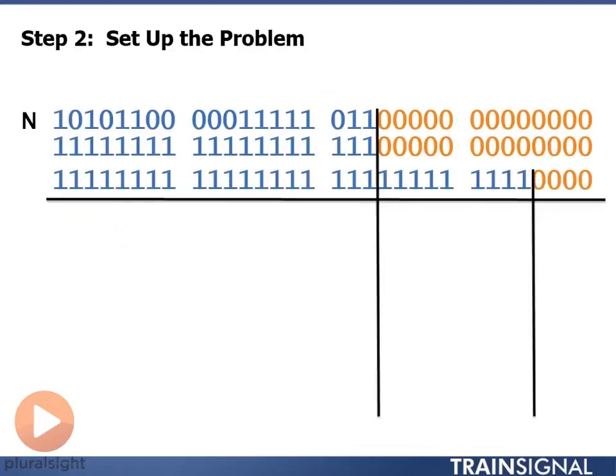So we set up the problem. We put our given address and mask up at the top. We draw a line between our given network and host portion. We then calculate our new mask by taking an additional 9 bits above and beyond our given 19 bits, and draw a line between our new network portion and host portion.